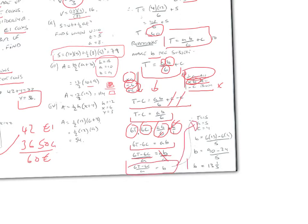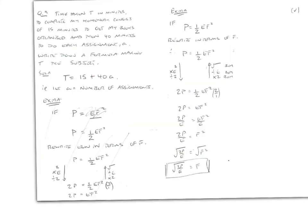Substituting the values gives b = 13.2 or 13 and one fifth. Here's another formula example: the time t in minutes to complete homework consists of 15 minutes to get books organised plus 40 minutes per assignment a. So the formula making t the subject is t = 15 + 40a. For one assignment that's 55 minutes; for two assignments it's 15 + 80 = 95 minutes.